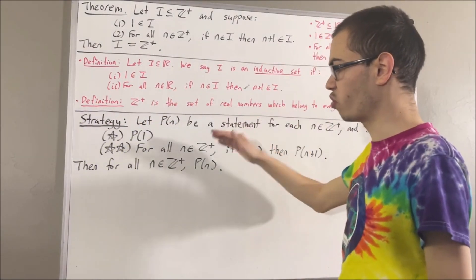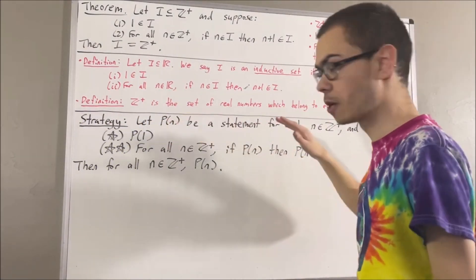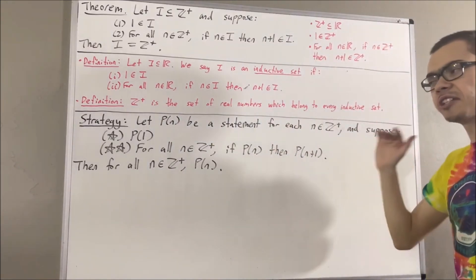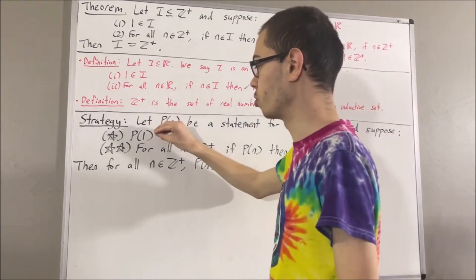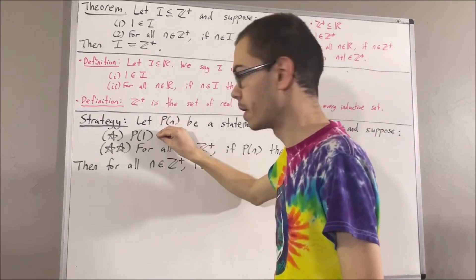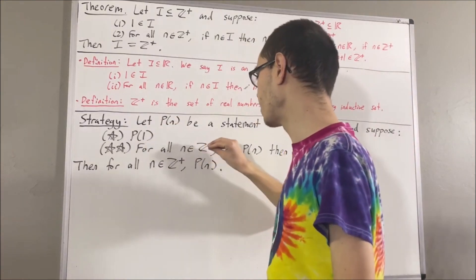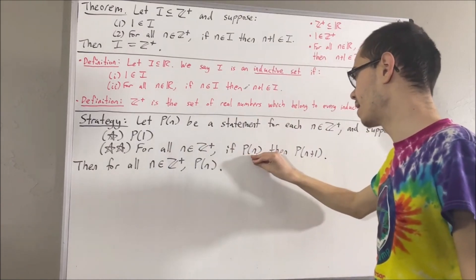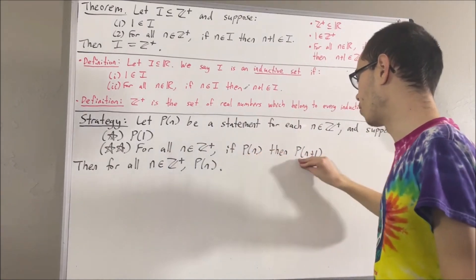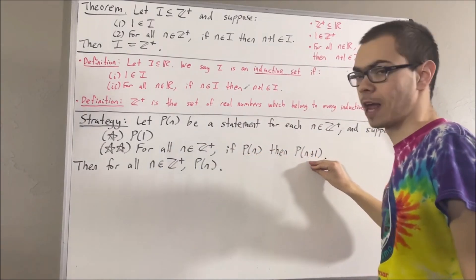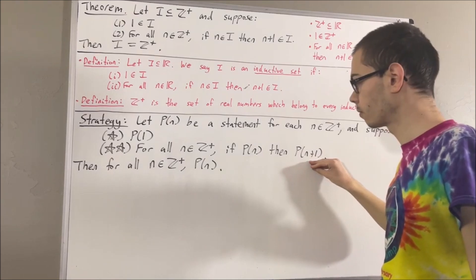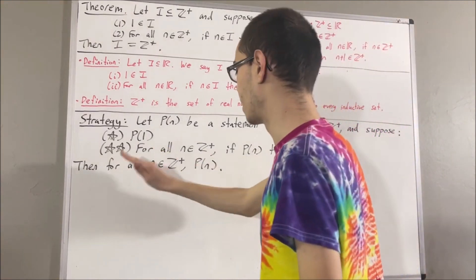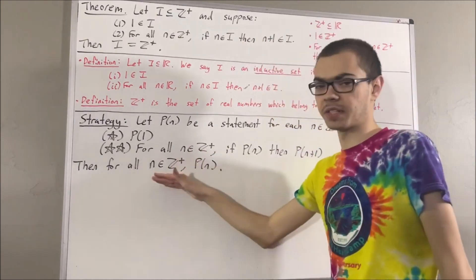Suppose we are trying to prove a statement p holds for every positive integer. And suppose we have shown that p holds for 1, and for every positive integer n, if we assume p holds for n, then we can conclude p holds for n plus 1. Then this is enough to conclude that p holds for every positive integer.